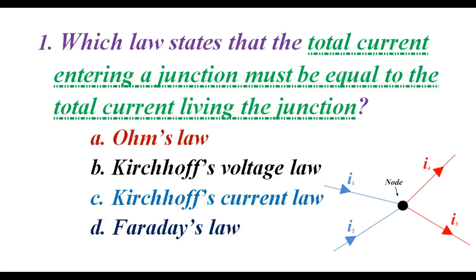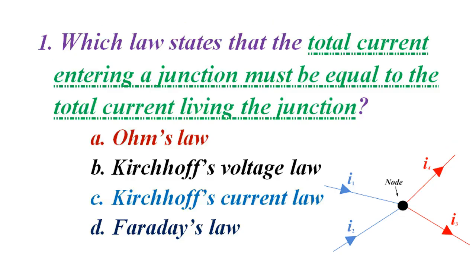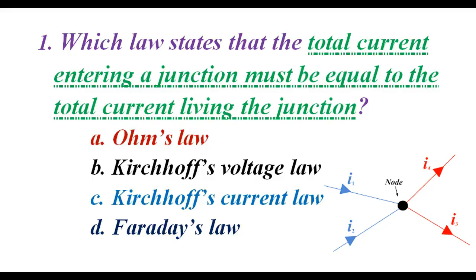Which law states that the total current entering a junction in a circuit must be equal to the total current leaving the junction? A. Ohm's law. B. Kirchhoff's voltage law. C. Kirchhoff's current law. D. Faraday's law. The correct answer is C. Kirchhoff's current law.